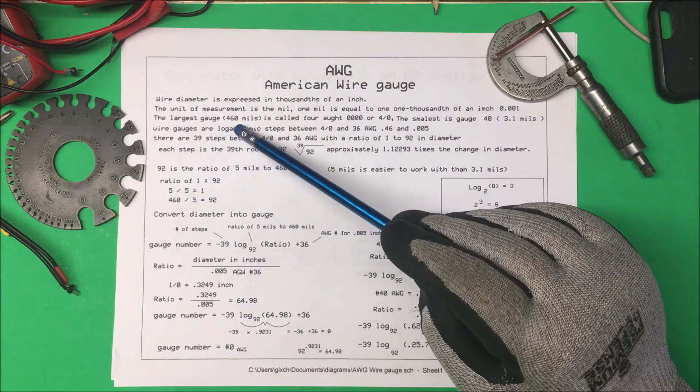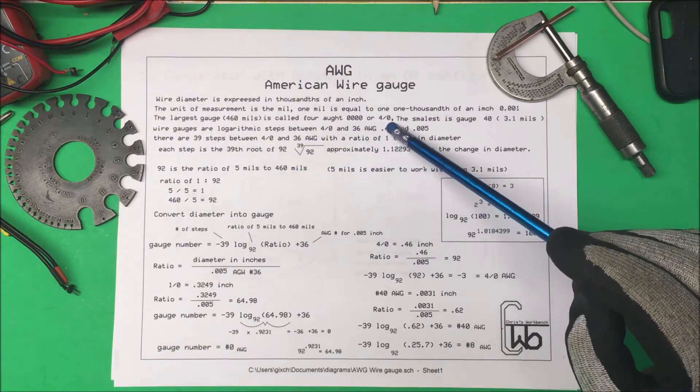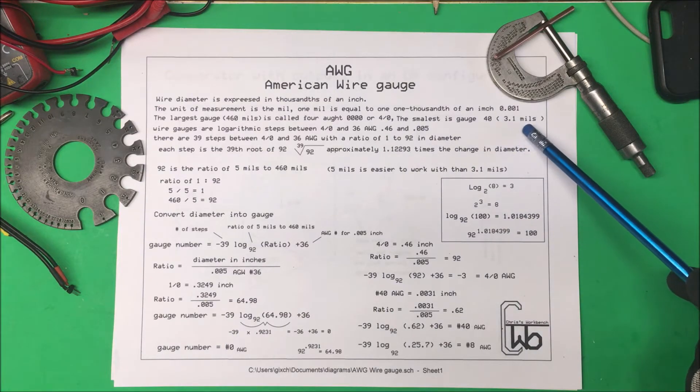The largest gauge is 460 mils and it's called four aught written with four zeros or four aught this way, and the smallest gauge is 40 which is 3.1 mils.